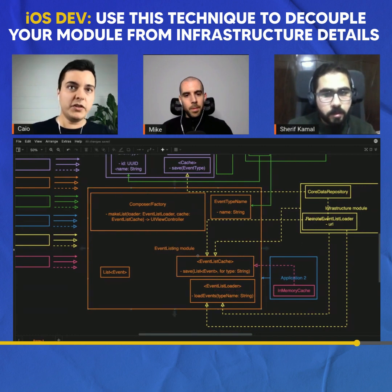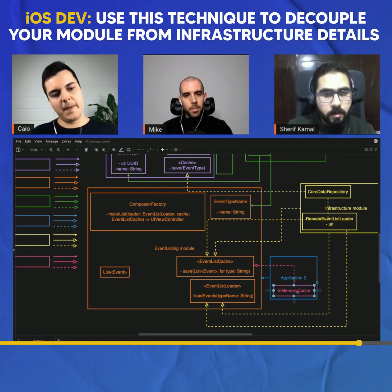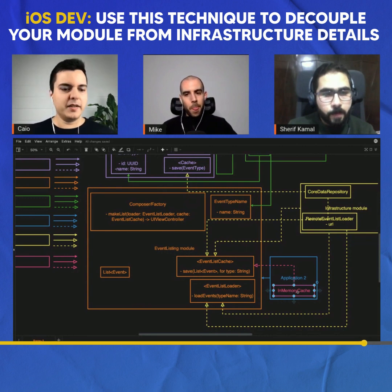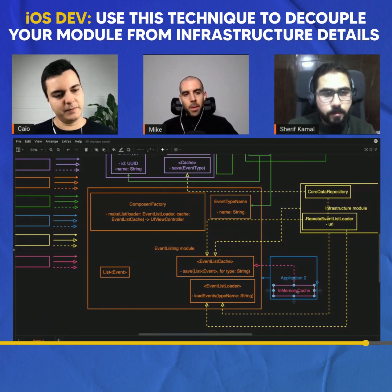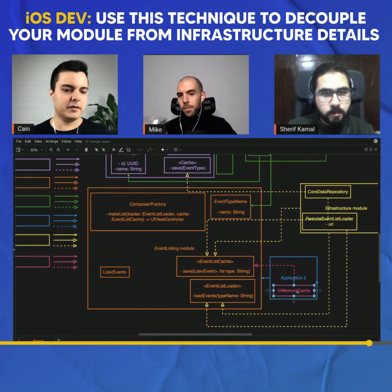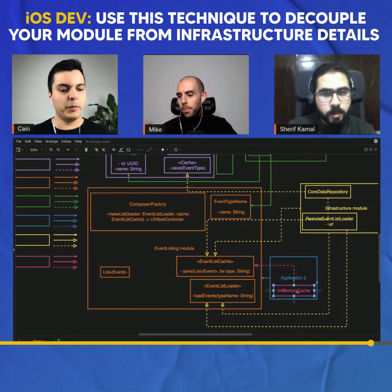It's the same feature with different infrastructure for different applications. You could even say: if you're a paying premium customer, you get CoreData persistent caching; if you're not, you get only in-memory caching — lose everything when you close the app, require an internet connection. If you're a premium customer, you get offline caching. It opens up possibilities.